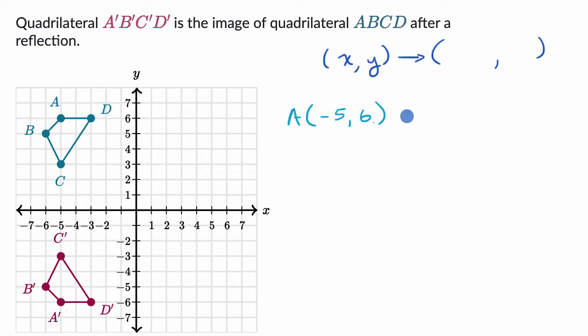And let's see, the image when it goes to A prime is at, it looks like it's at negative five comma negative six. So the X coordinate stayed the same if I just look at this point, but the Y coordinate became the negative of it.